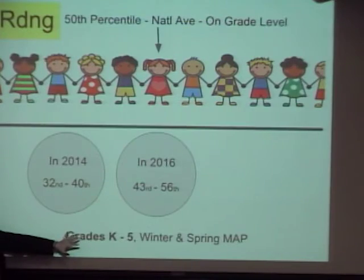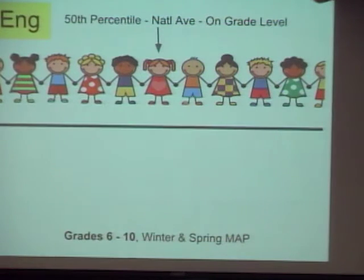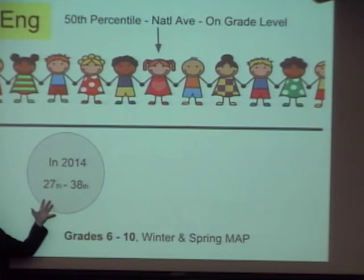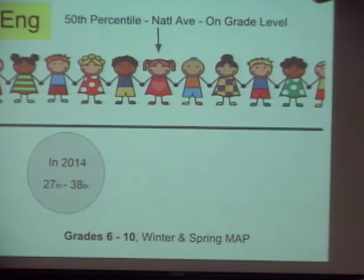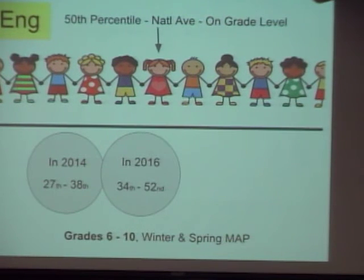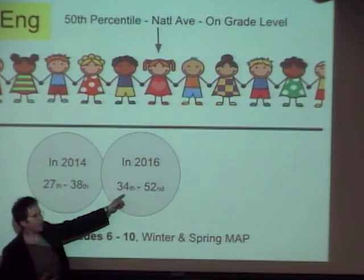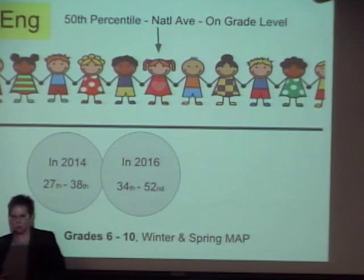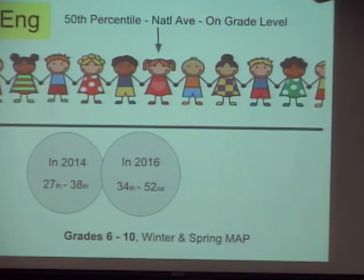This is reading English, and now we're going to look at middle school and high school — grades 6 through 10. We only give MAP up to 10th grade. The 50th percentile still means you're right on grade level. This is where we started: lower than K-5, from the 27th to the 38th percentile across grades 6 through 10. And this is where we are now: the 34th to the 52nd percentile. So not all grades are at grade level, but we've made a big move, and some grades are right on grade level.